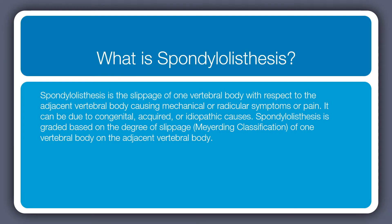Spondylolisthesis is a slippage of one of the vertebral bodies with respect to the vertebral body usually right below it. This is really an imaging diagnosis. It is often associated with some sort of pain, either mechanical or radicular pain. There are a few different types and gradations based on the severity of the slippage. This video will primarily look at cases that come later in life that are not congenital — the acquired cases that are of low severity — as those can best be addressed with exercises.